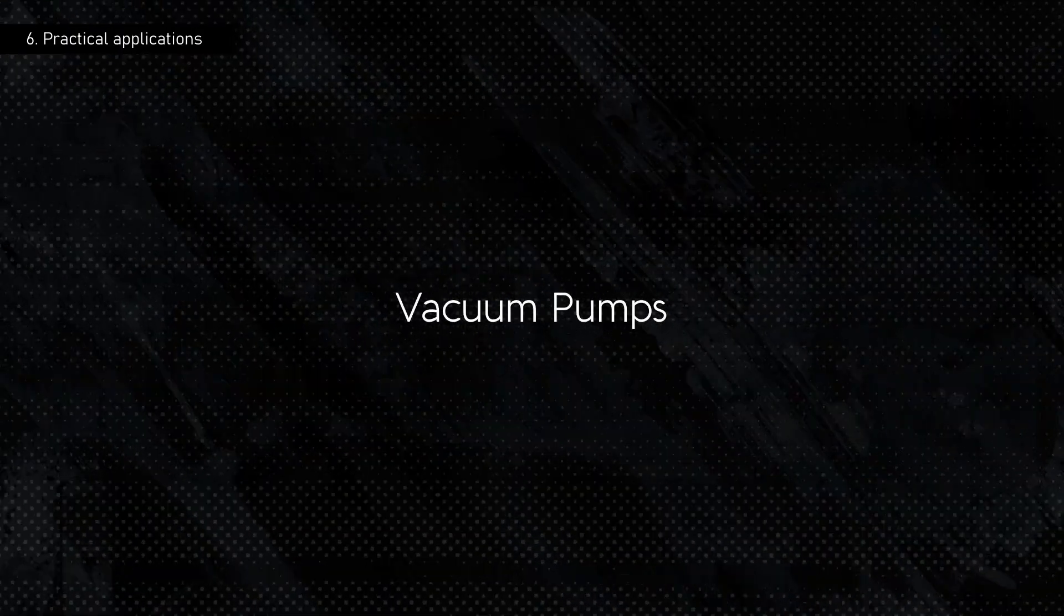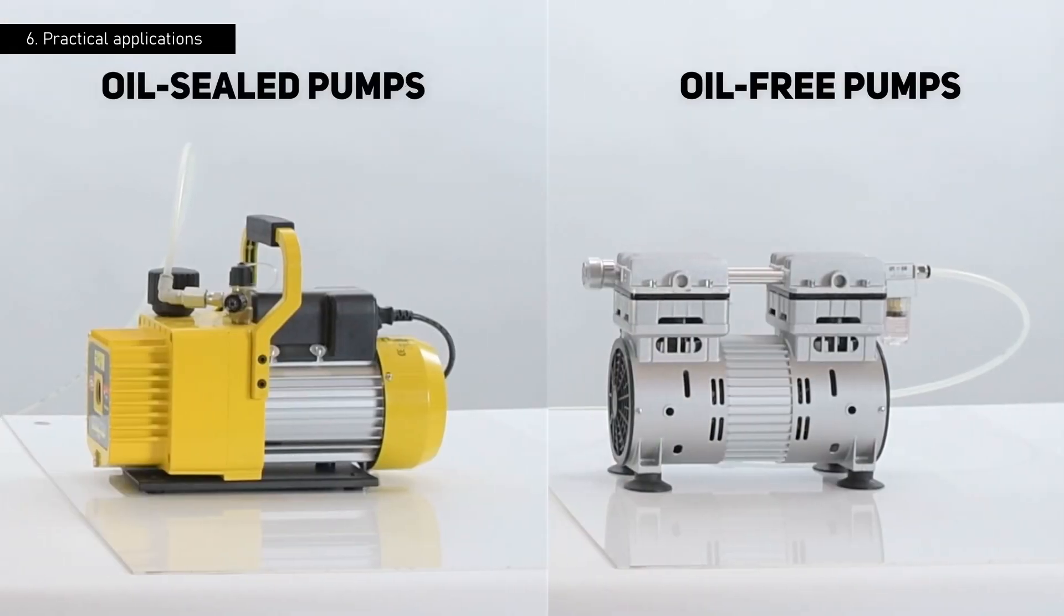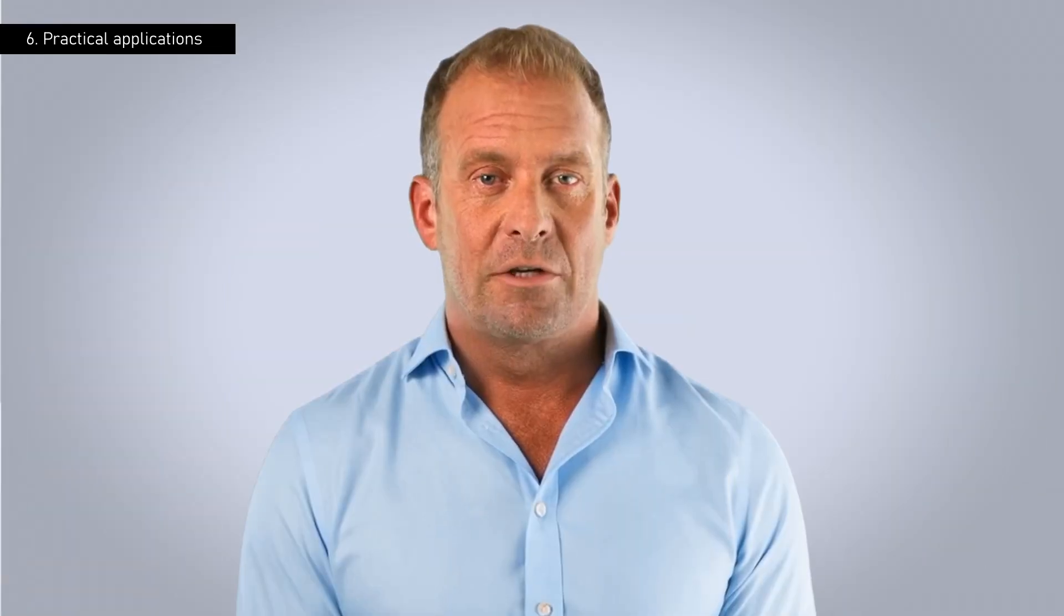Let's take, for example, our vacuum pumps, which have a maximum relative pressure of minus 900 millibars at sea level. However, this range varies with altitude due to differences in atmospheric pressure in each area.